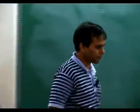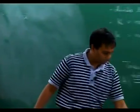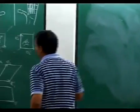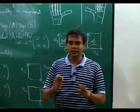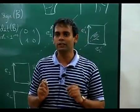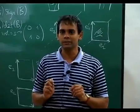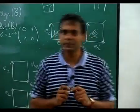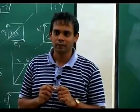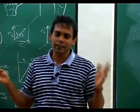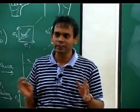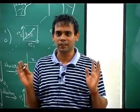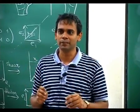Now let us show that this geometric notion of determinant has the right properties with respect to row and column operations. That should be enough to show it coincides with any other algebraic definition of determinant.